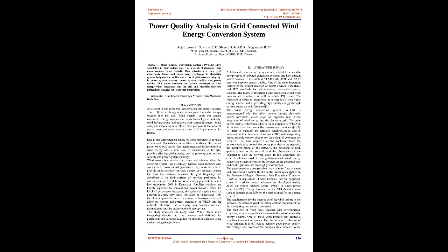The intermittent and diffuse nature of wind energy adds a new level of uncertainty to the grid, possibly affecting grid integrity such as power quality, system security and power system stability. To effectively replace conventional generators with wind turbines, they must be able to provide ancillary services, control key voltages, ensure load following, maintain grid frequency and contribute to fault current — all services performed by conventional power stations.